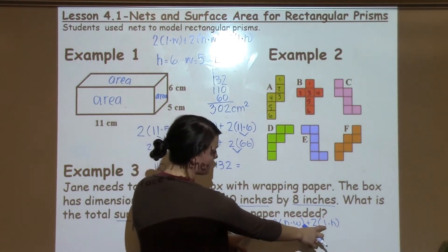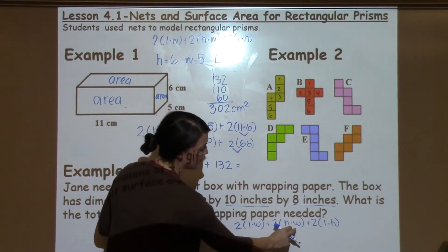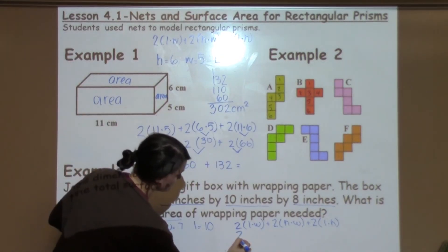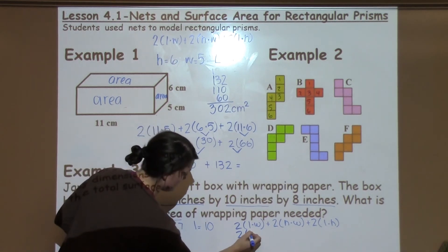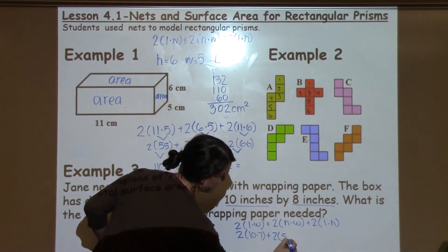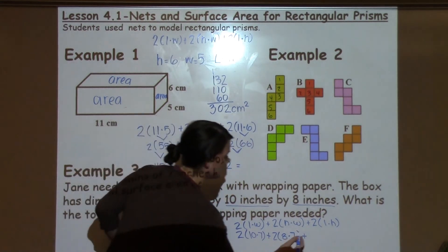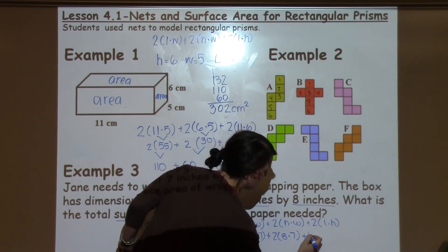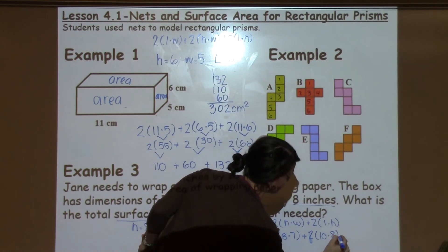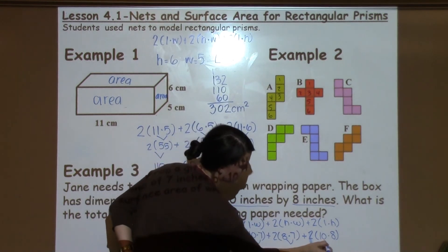So in this formula, I see length twice, I see height twice, I see width twice, and I just don't want to double the combination of when I use it. Alright, so let's go ahead and plug it in. I've got 2 times 10 times 7 plus 2 times 8 times 7 plus 2 times 10 times 8. So the first thing I'm going to do is multiply what's in the parentheses. 10 times 7, 8 times 7, 10 times 8. 10 times 7 is 70. 8 times 7 is 56. 10 times 8 is 80.